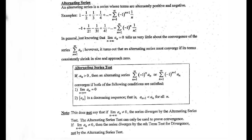The alternating series test: if a sub n is greater than 0 — so the terms are bigger than 0 — then an alternating series converges if both of the following conditions are satisfied. First, the limit as n approaches infinity of the sequence must approach 0. Second, a sub n is a decreasing sequence — that is, if the term after is less than the term before it for all n. In other words, if it's going 1/2, 1/3, 1/4 and so on, as long as the (n+1)th term is less than the nth term, then this is a decreasing sequence.